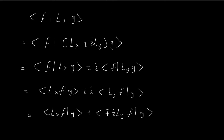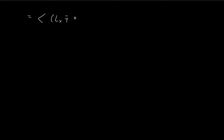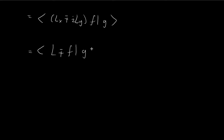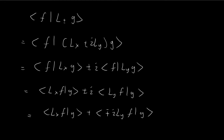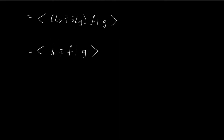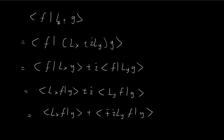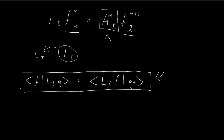We can now recombine these two terms, giving ⟨(Lx ∓ iLy) F | G⟩, which is just ⟨L∓ F | G⟩. We can see that L∓ is the Hermitian conjugate of the L± operator, and this concludes our proof for this relationship.